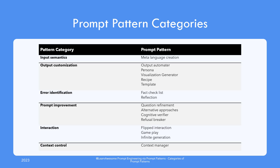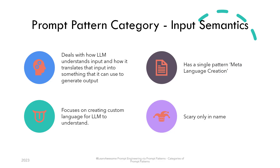It's best to know the name and some information about these, and they would start to make sense once we go over the constituent patterns of each category. Input semantics category deals with how the large language model understands the input and how it translates that input into something it can use to generate output.